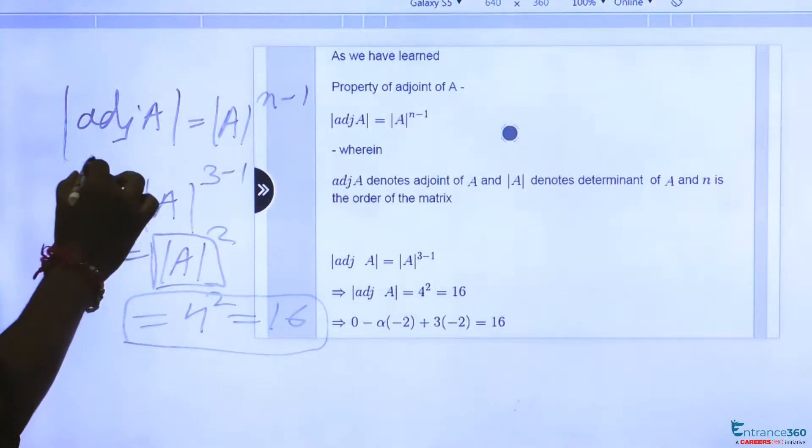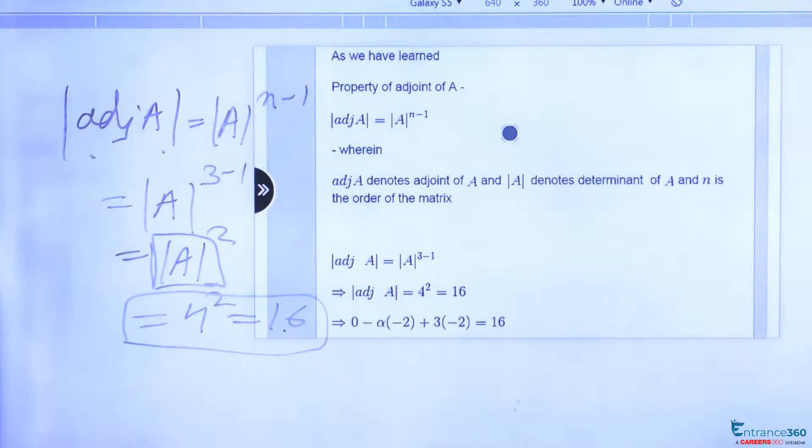So we have got |adj A| equal to 16, and we have been given a matrix which the question is saying to be adjoint A. So we need to find its determinant and then put it equal to 16.